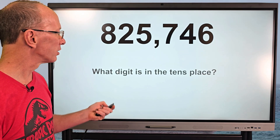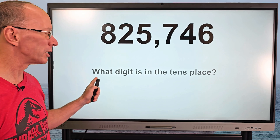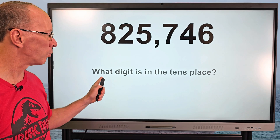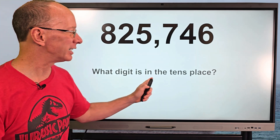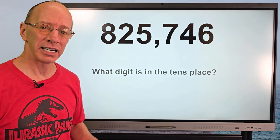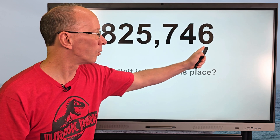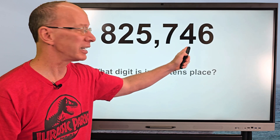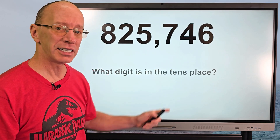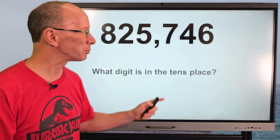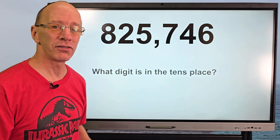Let's take a look at this question right here. What digit is in the tens place? Well here's our ones and our tens. The digit in the tens place would be four.